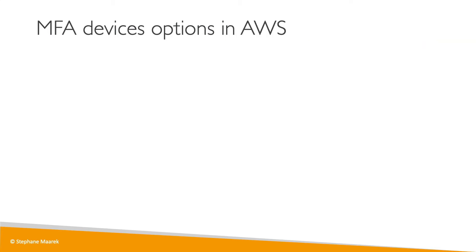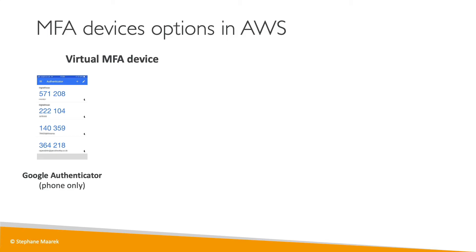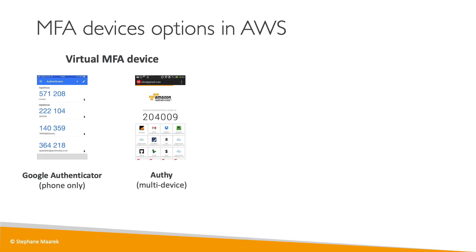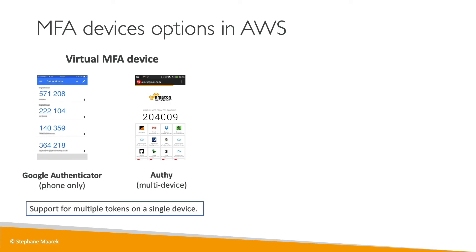So what are the MFA device options in AWS? You need to know them going into the exam, but they're quite simple. The first one is a virtual MFA device — this is what we'll be using in the hands-on. You can use Google Authenticator, which works on one phone at a time, or Authy, which is multi-device. They both work the same way, except Authy is multi-device. Authy has support for multiple tokens on a single device, so with a virtual MFA device you can have your root account, your IAM user, and other accounts all in one place. You can have as many users and accounts as you want on your virtual MFA device, which makes it a very easy solution to use.